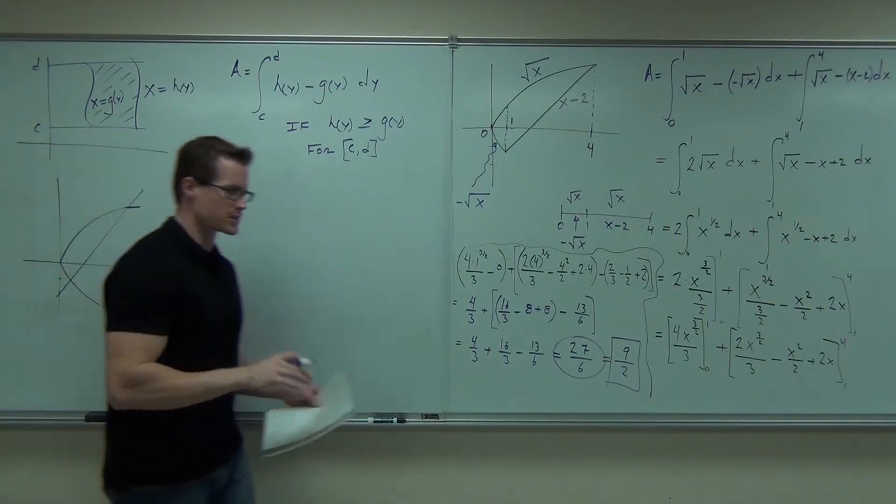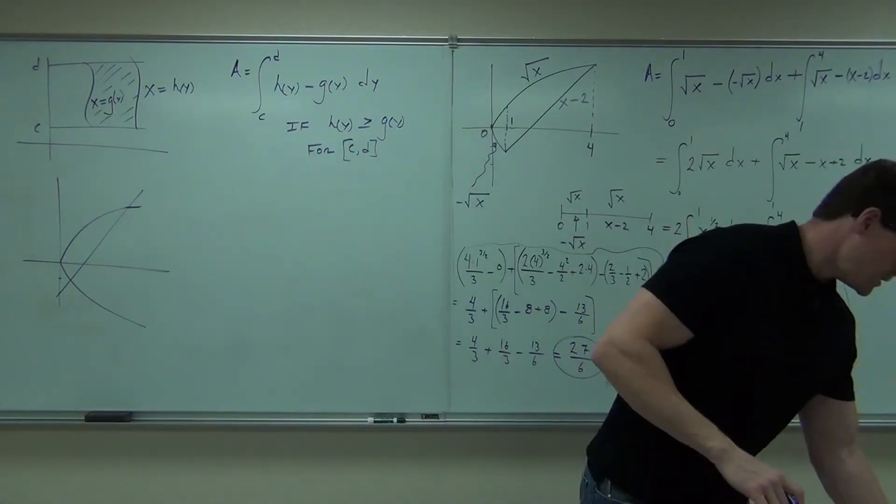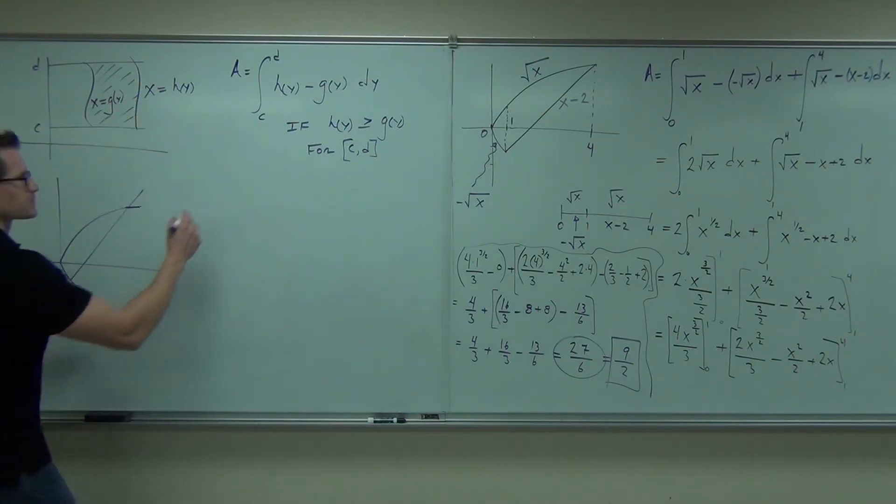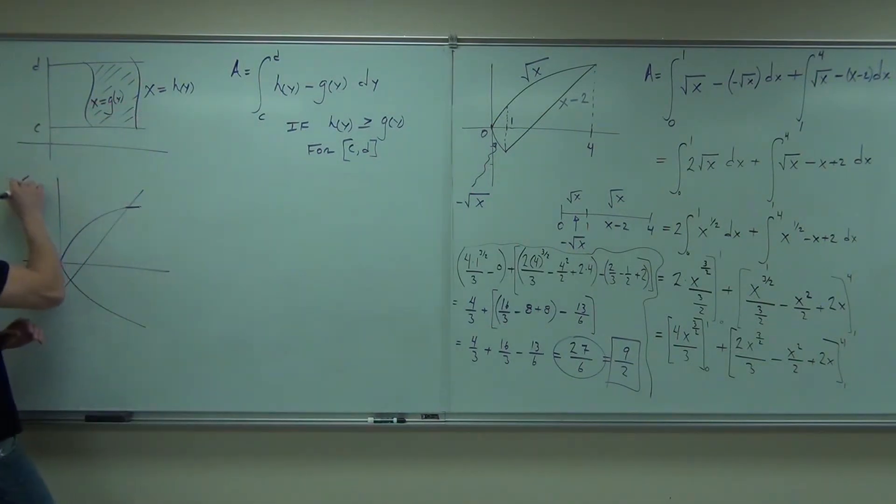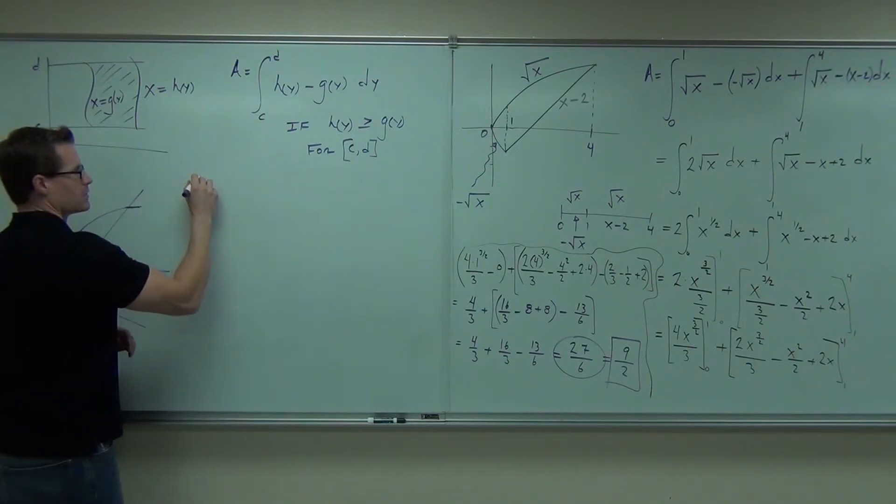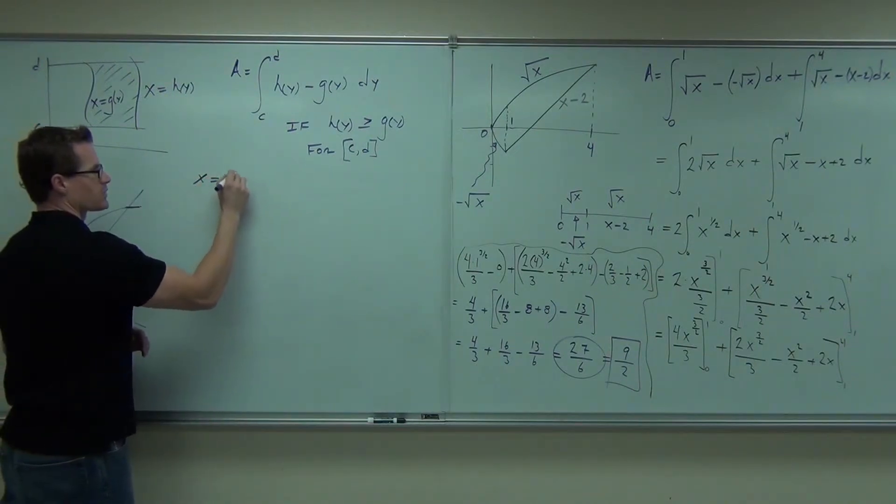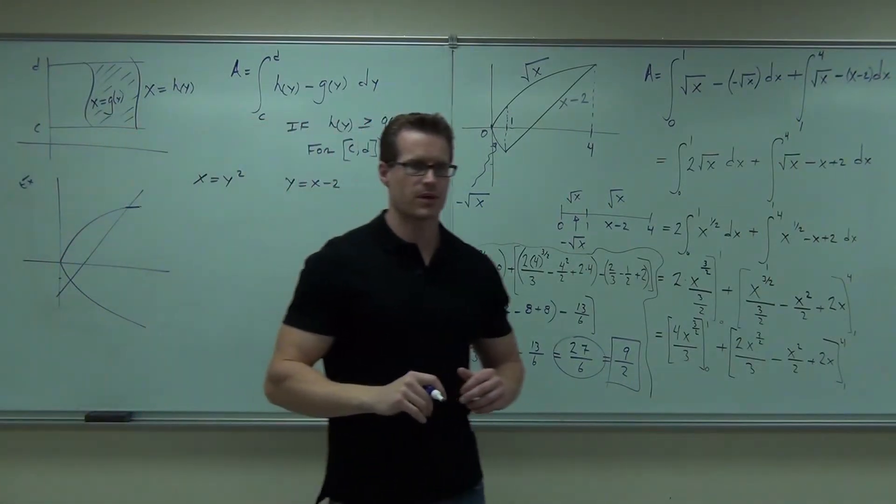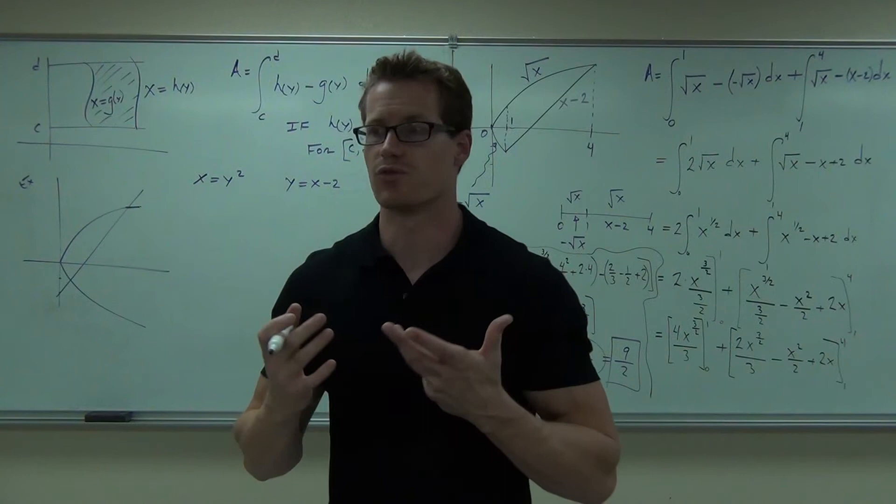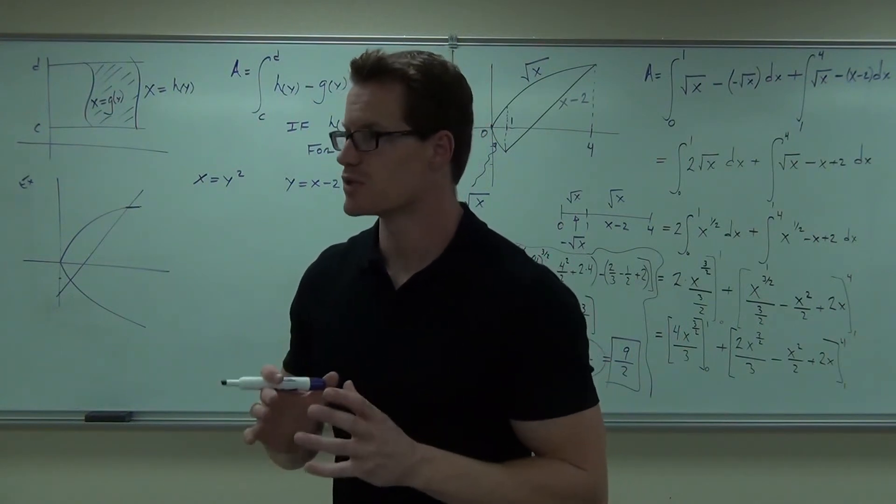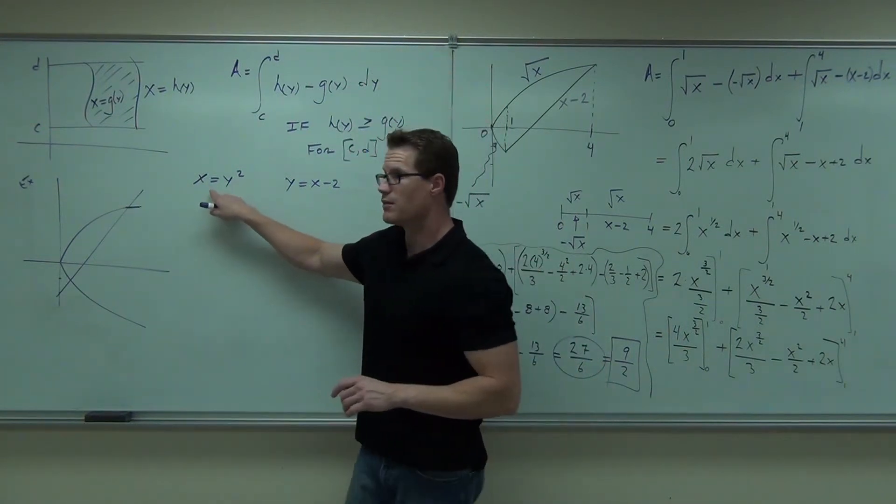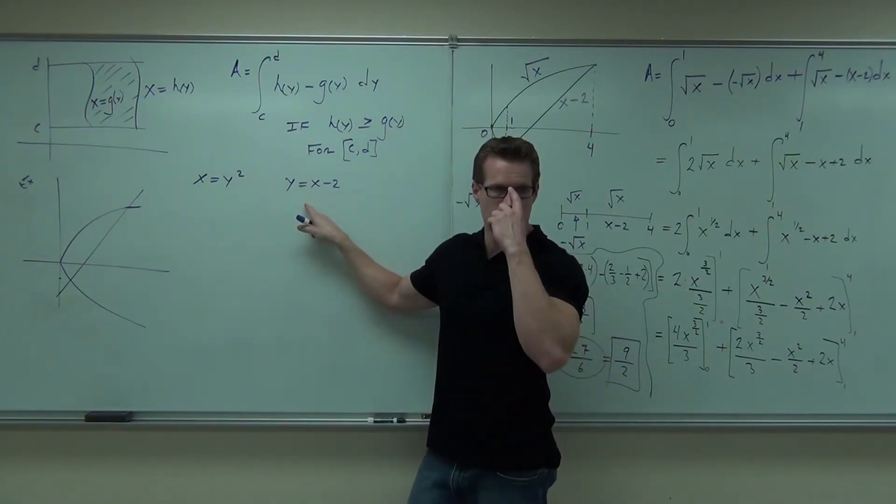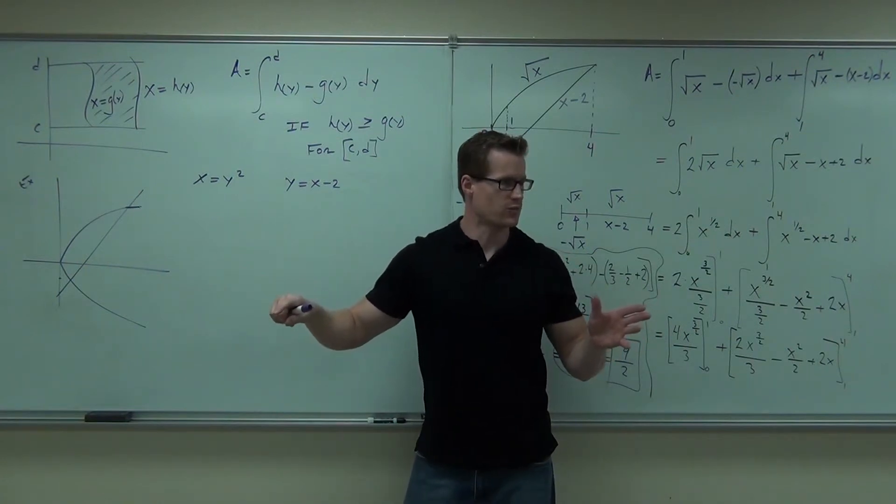Yeah, I want you to see that this works out the same. Now, if we're in terms of y, I need you to notice something. We had x equals y squared and we had y equals x minus 2. You with me? If we're going to do this in terms of y, our functions need to be in terms of y. Now, this one's great. We love this one. This one's not great. Explain to me why. How do I solve it for terms of y?